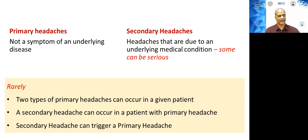It is rare but a patient can have two types of primary headaches going on at the same time — for example, a patient can have a migraine along with tension type headache. Also, a patient being followed up for a primary headache like migraine can develop a secondary headache, such as a tumour, which you should not miss on follow-up. Secondary headache can also trigger a primary headache; for example, a patient who gets a head trauma can later develop migraine.